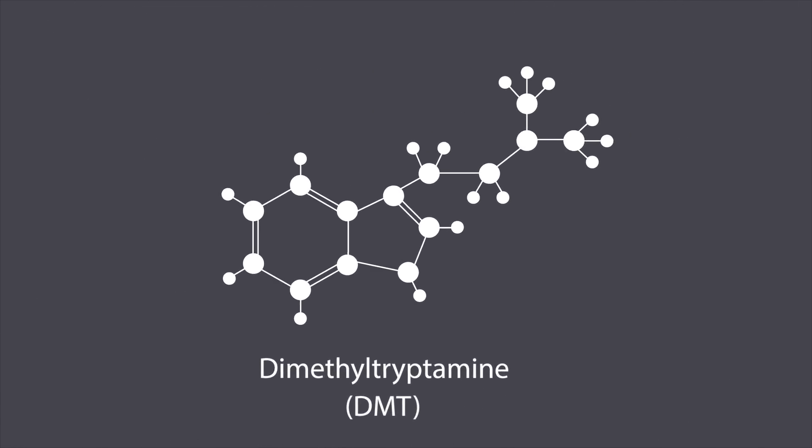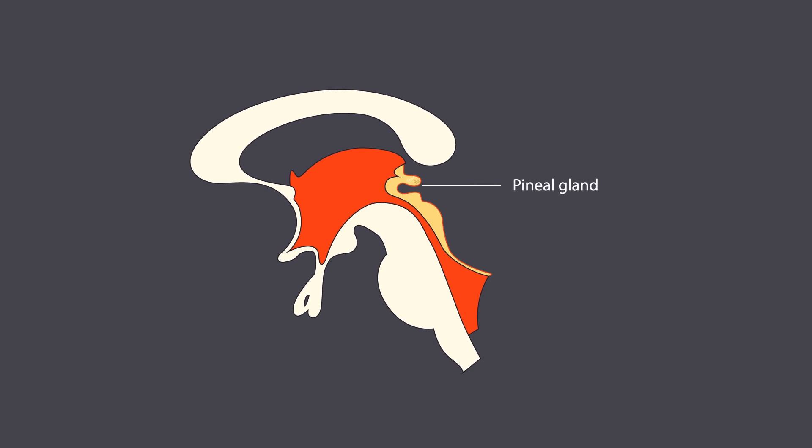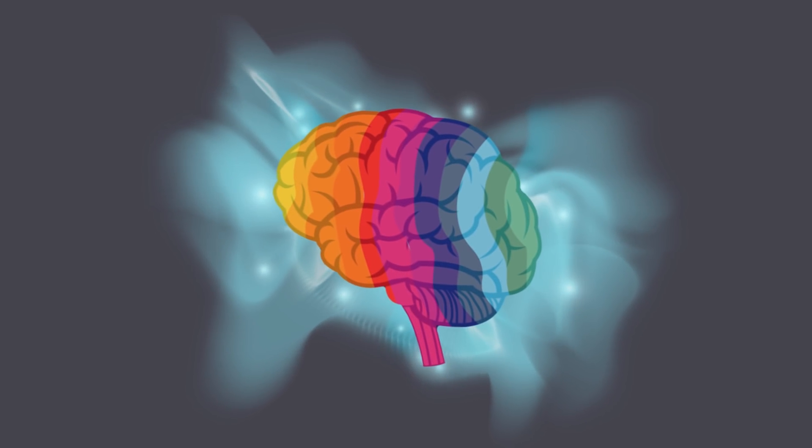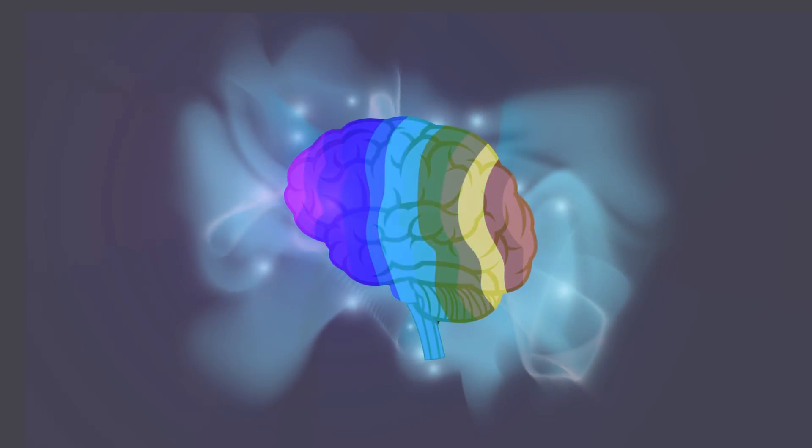But the pineal gland also uses another molecule, called dimethyltryptamine. DMT is like serotonin, but it uniquely crosses the special blood-brain barrier that gives it access to the pineal gland. Trials have shown that DMT given to patients can alter their state of consciousness in a similar way.